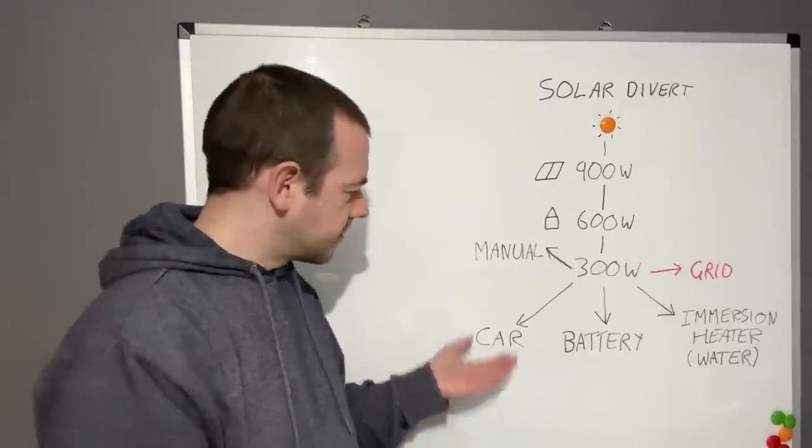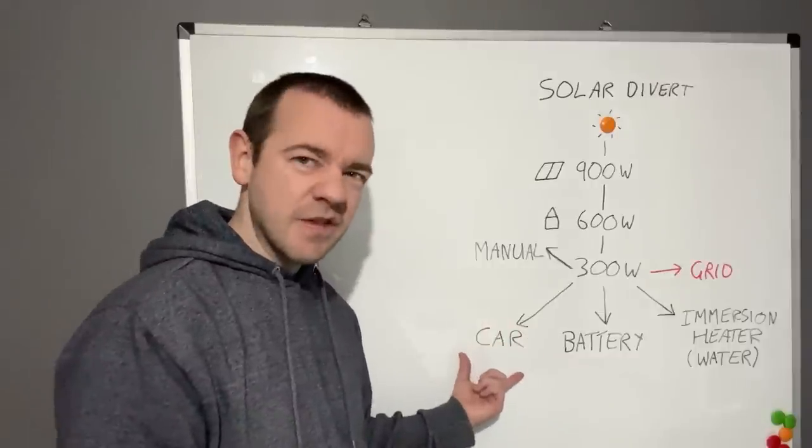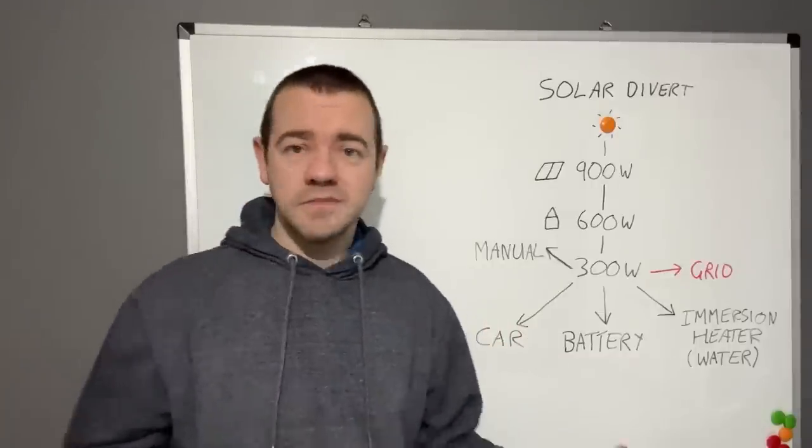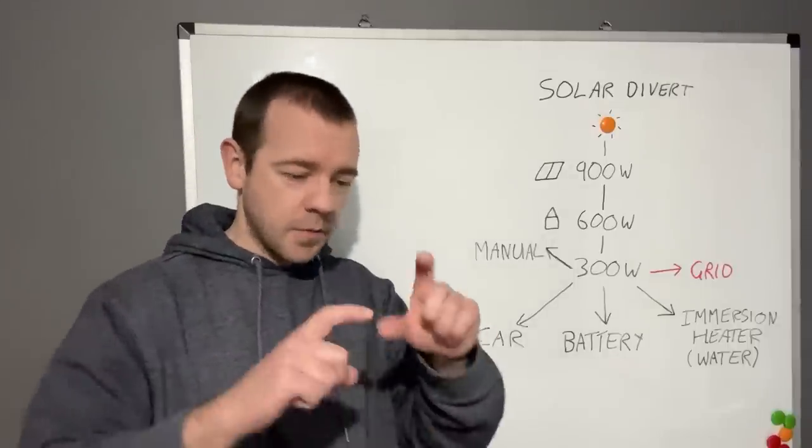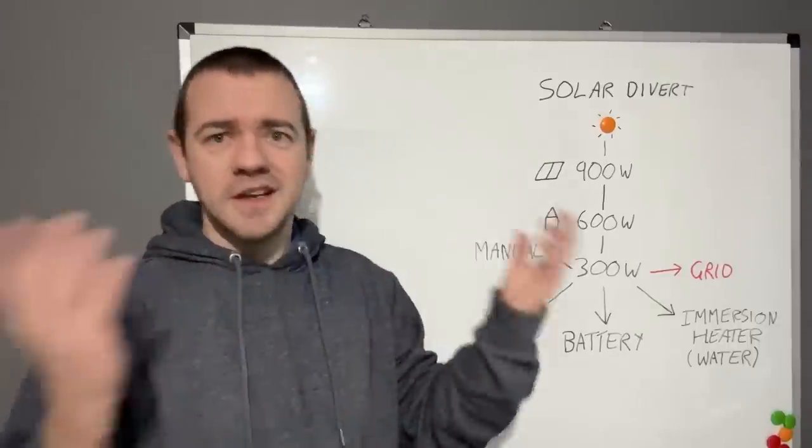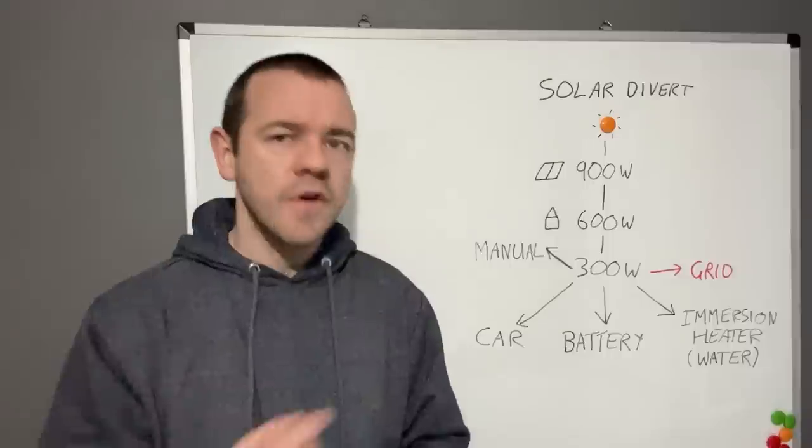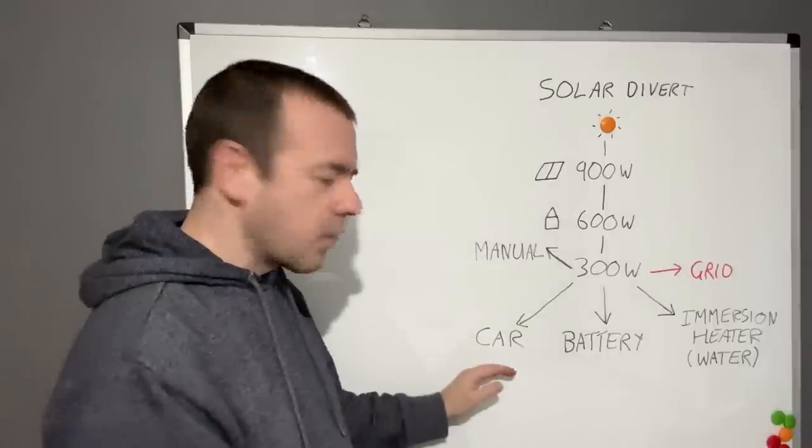Then that won't work. So that for me is more of a secondary thing. It's not a primary solar divert option because, well, for us the car's probably out more than it's at home because we both work different shift patterns, and it wouldn't really make that much sense. Nice to have, but probably the lowest of the bunch out of all these options.